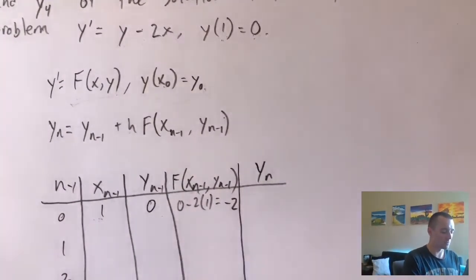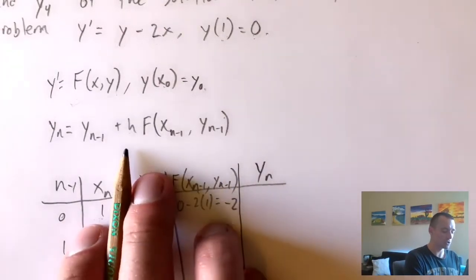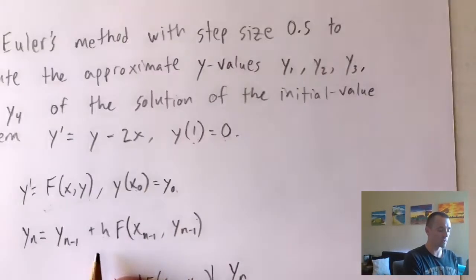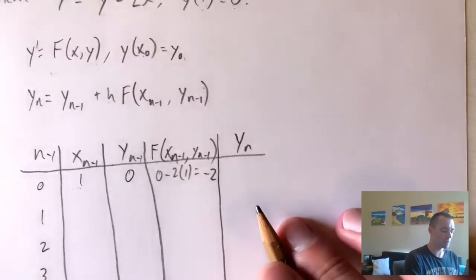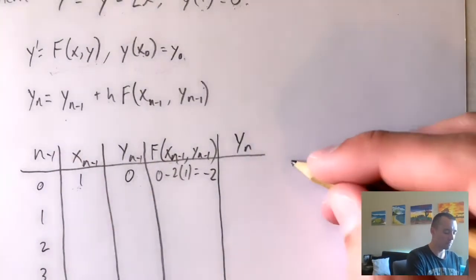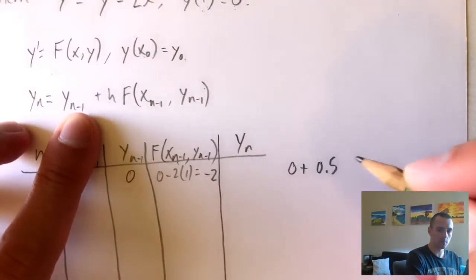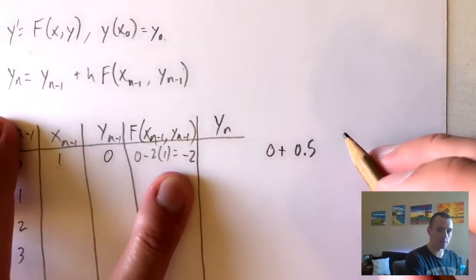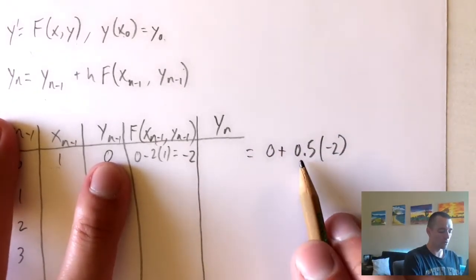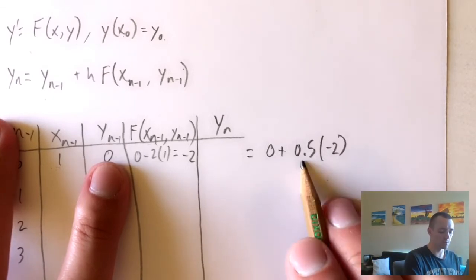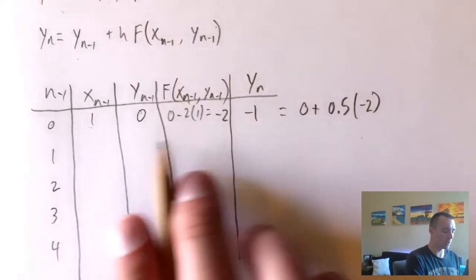Our y_n is found by plugging these three values into the Euler's method formula. The step size h is 0.5. So y₁ = previous y + h × f(x₀, y₀) = 0 + 0.5 × (−2) = 0 − 1 = −1. Once we have this y_n we carry it down into the next row's y column.